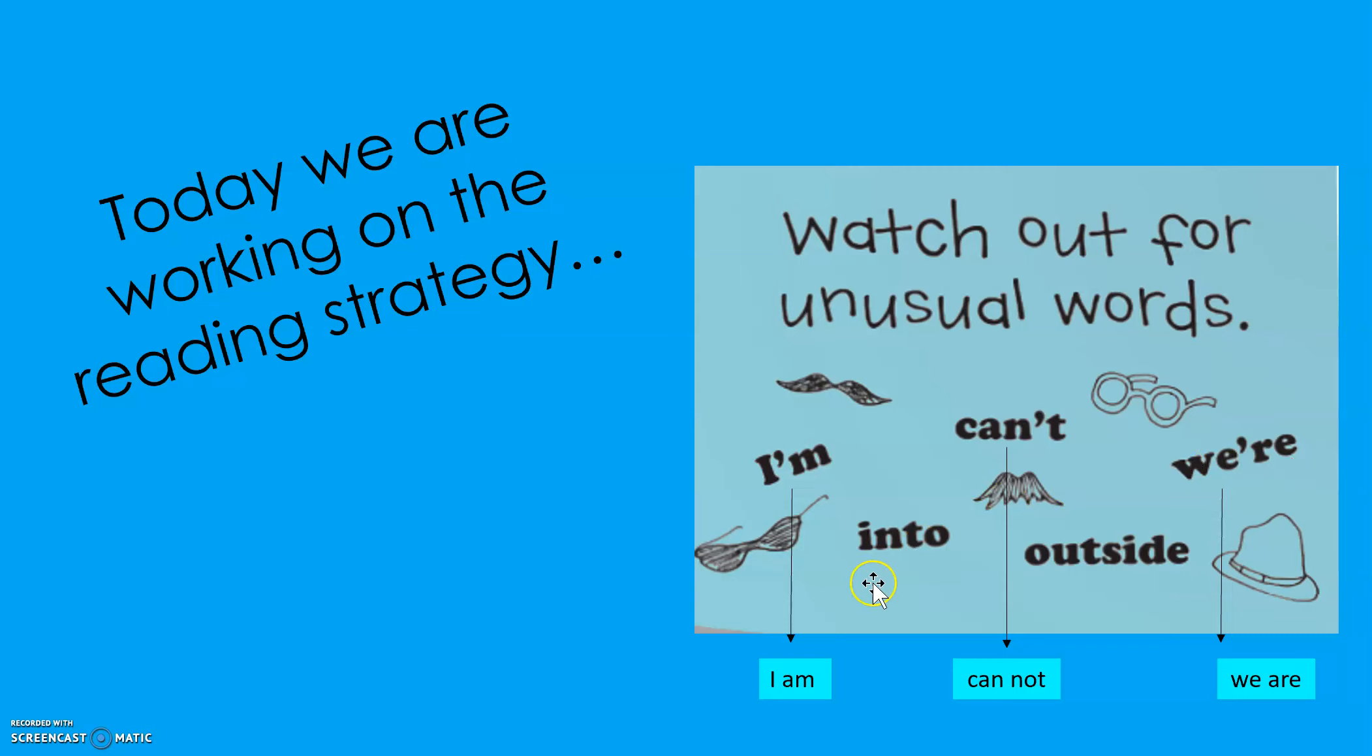Some other unusual words that you might come and find are compound words. So that's two words that are put together. No letters are missing. For example, here we have into. In and to are put together. Here we have outside. Out and side are put together.